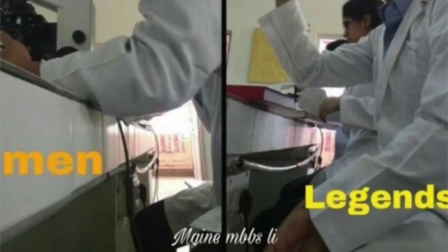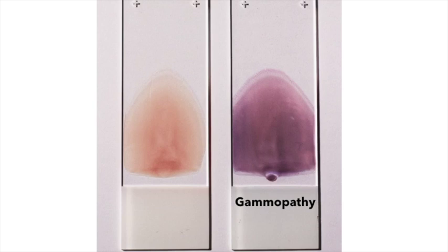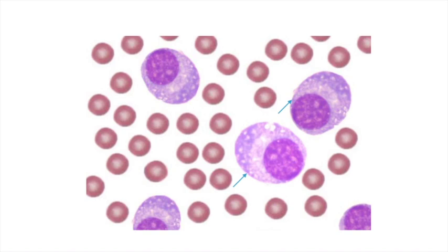Because of the increase in globulins, the slide of multiple myeloma or macroglobulinemia looks kind of darker compared to anemia, even though the patient of multiple myeloma also presents with anemia. This darker appearance is due to the increase in gamma globulins that bind to the stain. You might get a spotter or MCQ where on the basis of macroscopic examination of the slide you have to identify multiple myeloma — in this case the image is the one on the right labeled as gammopathy. In a normal peripheral blood smear, you don't see any plasma cells.